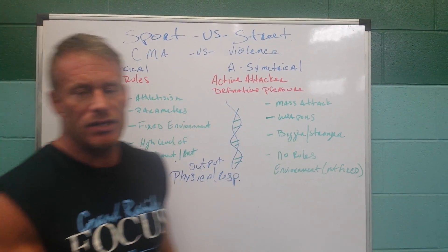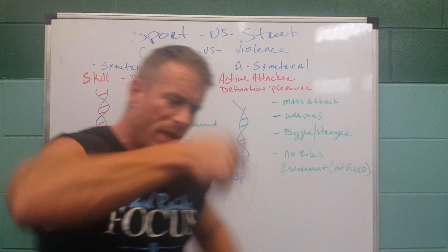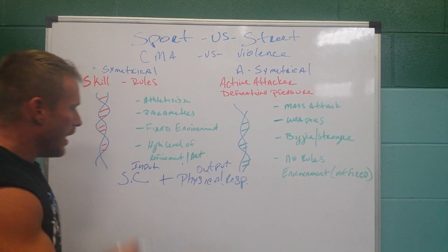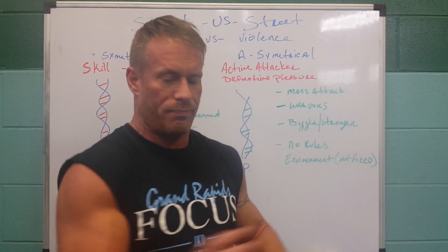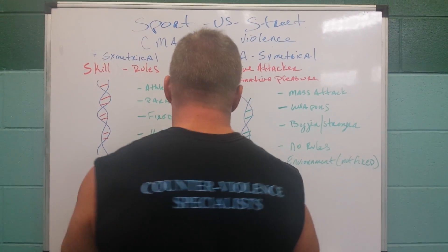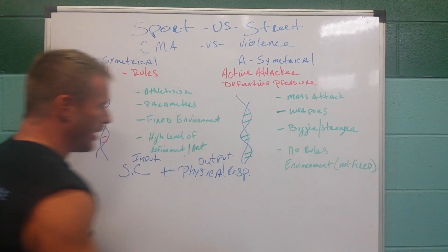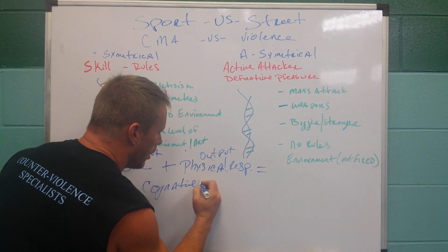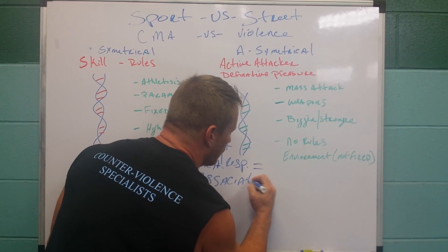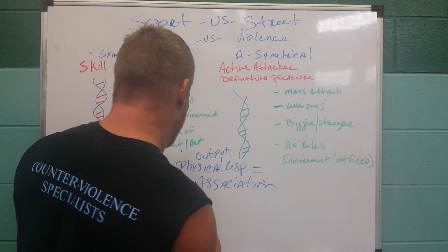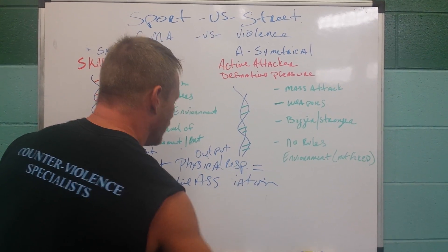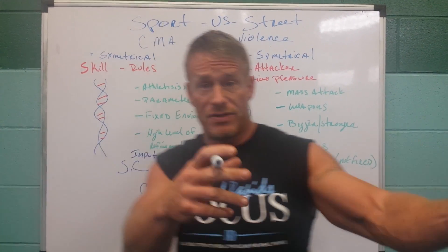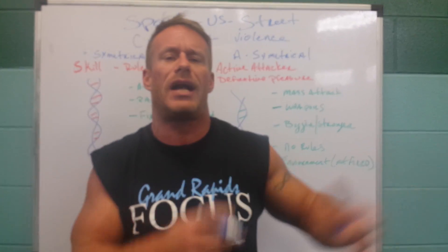If someone slashes at me with a knife, I may pick to cut the hand. So your input matches your output — it has to. If you're doing Wing Chun, your input is a straight punch and your output is a bong sa or whatever they do. My sensory cue plus my physical response together create a cognitive bridge — a cognitive association. I see something, I do something.